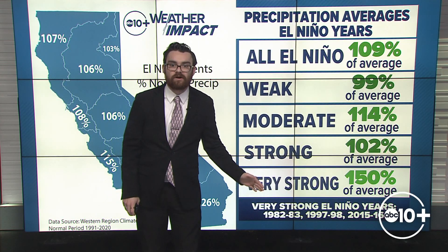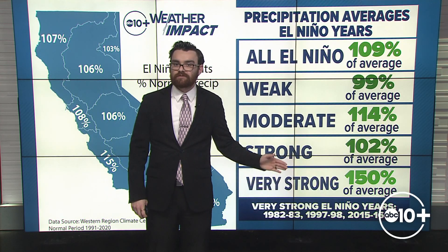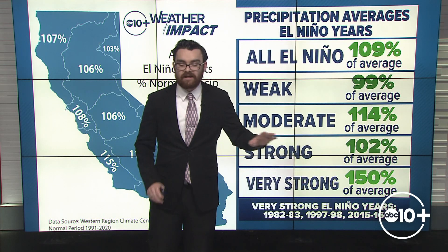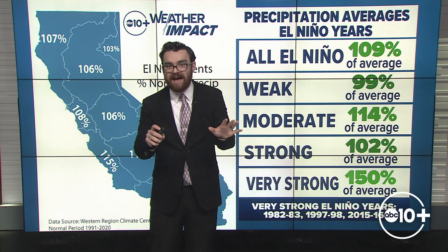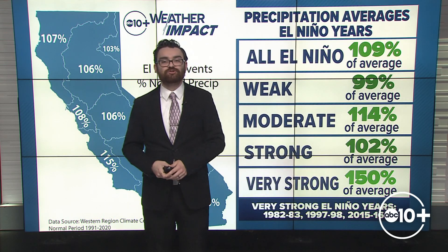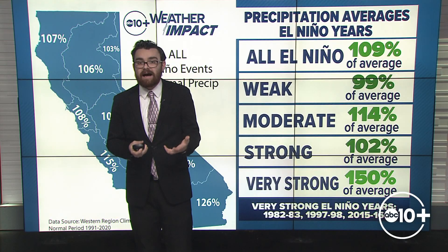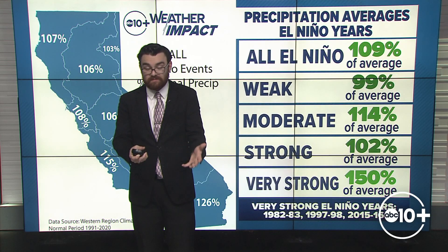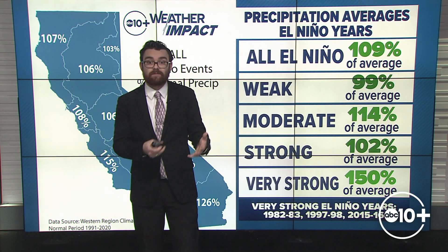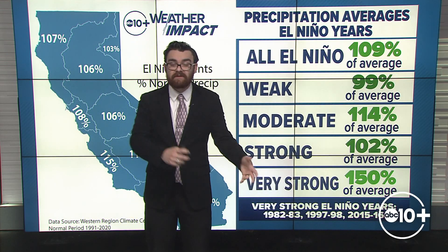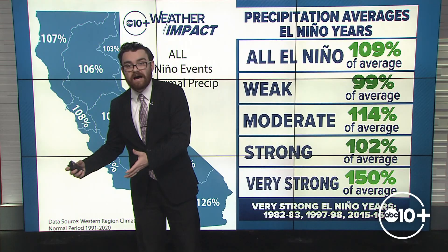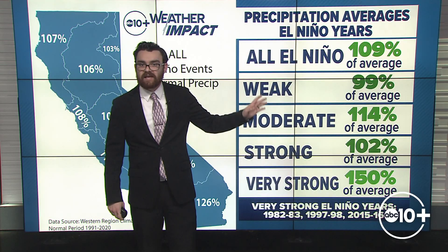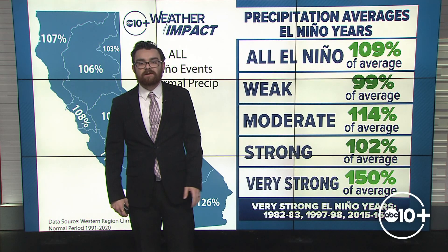We've had three very strong El Niño years, and very strong El Niños typically give us a lot more precipitation in the wintertime — a lot more rain in the valley and a lot more snow in the high country than we would see in a weak El Niño.